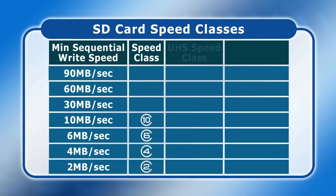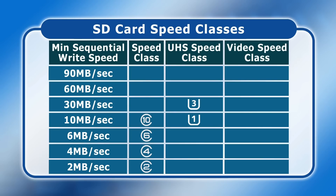Next to be introduced was the UHS or Ultra High Speed speed class, which indicates if a card can sustain either a 10 or 30 MB per second sequential write speed by placing a number 1 or 3 inside a letter U. Most recently SD cards have started to be labelled with a video speed class with the figure 6, 10, 30, 60 or 90 appearing after a letter V, indicating a minimum sustained write speed of 6, 10, 30, 60 or 90 MB per second.